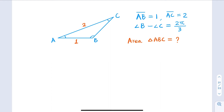This is a problem from China's Math Olympiad in 2021. It's a geometry problem, but we're going to use a lot of trigonometry identities to solve it. We're given a triangle with sides AB equal to 1, AC equal to 2, and we know that the difference of angles B and C is 2π/3. So what is the area?